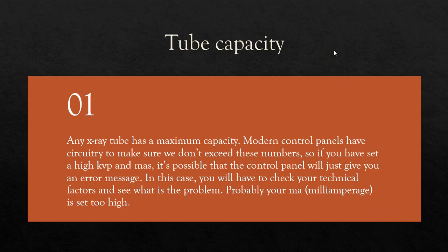The reason this is important is because of tube capacity. All x-ray tubes have a maximum capacity. And modern control panels have breaker switches — basically the computer knows how much heat and how much energy its particular tube can handle, and it's not going to let you exceed that limit. So if you dial some crazy technique, like really high KVP and really high MA, and you go to make your exposure, it's possible that the computer will stop you and give you an error message.